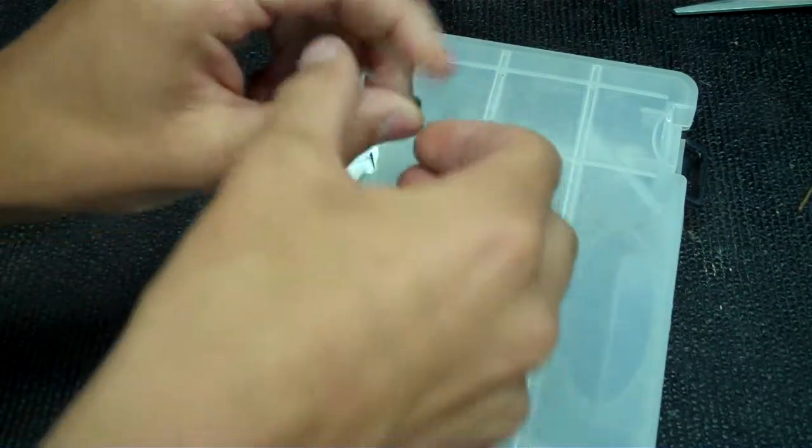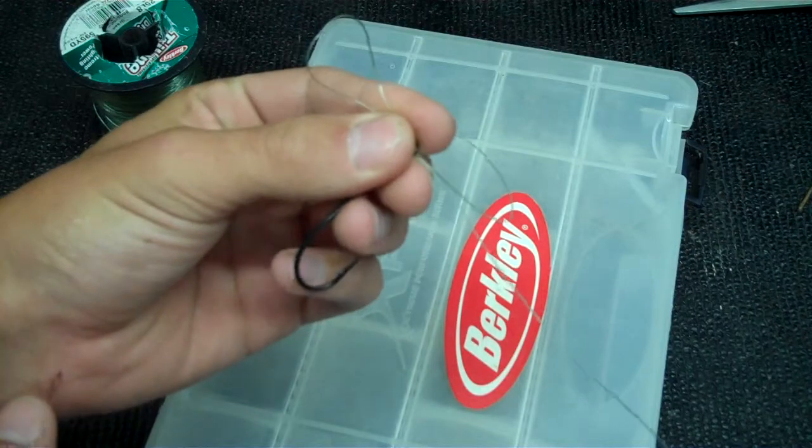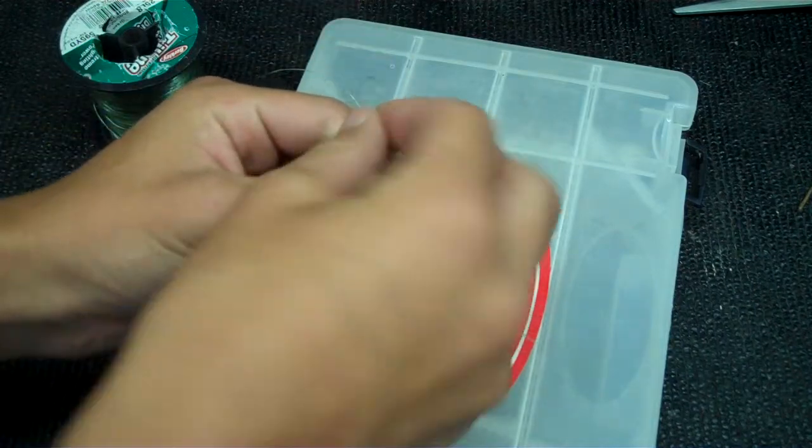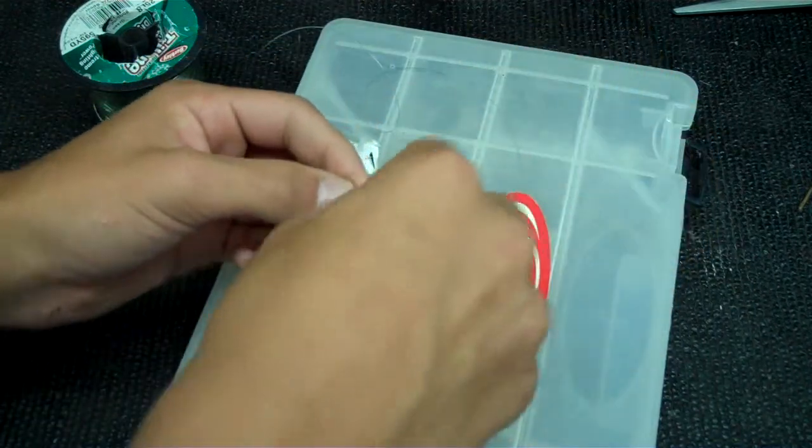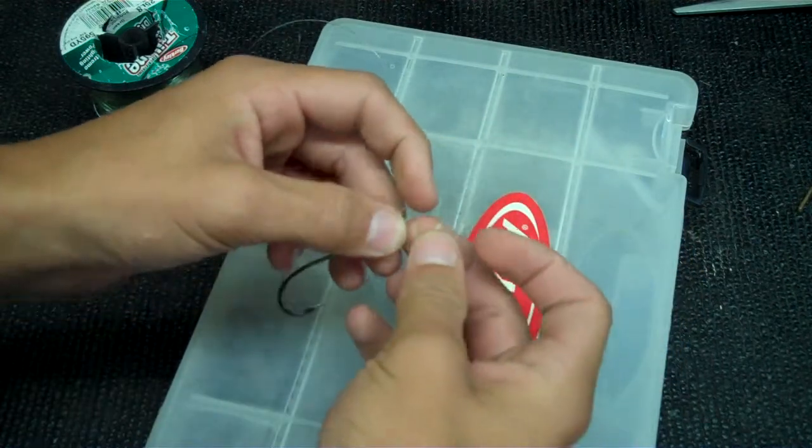You should have something like that. It's just a loop through the hook. Then wrap around and tie a knot with the loop on the remaining line.